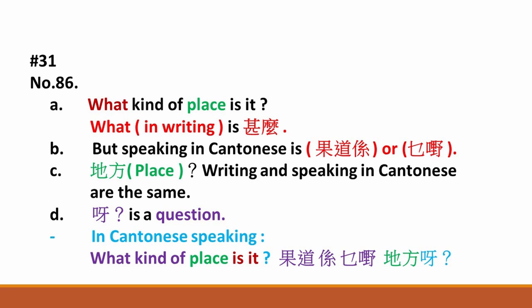What kind of place is it? In writing, it's 什麼. But speaking in Cantonese, it's 果度係或什麼. 地方 — place.